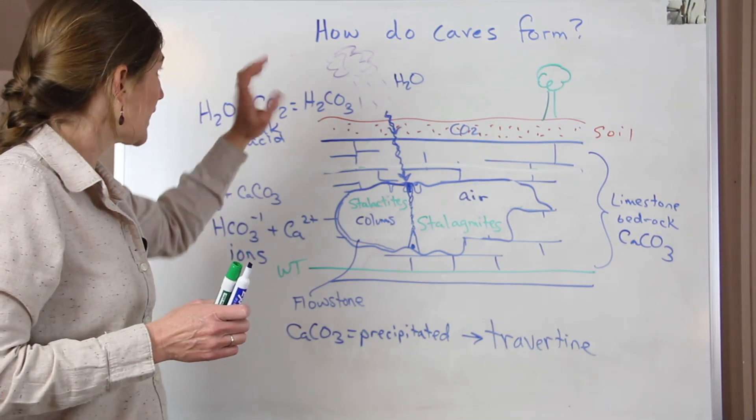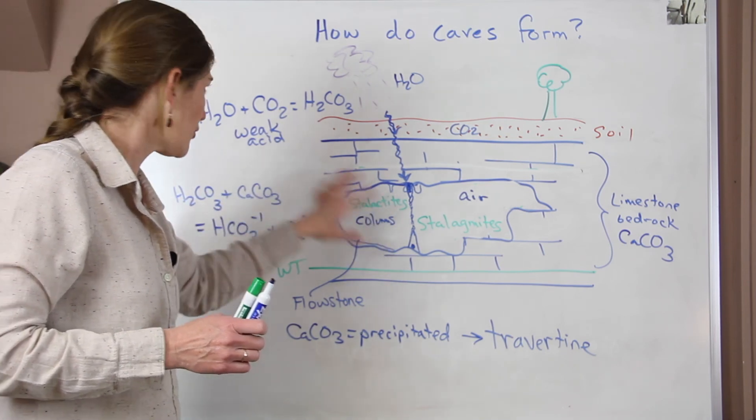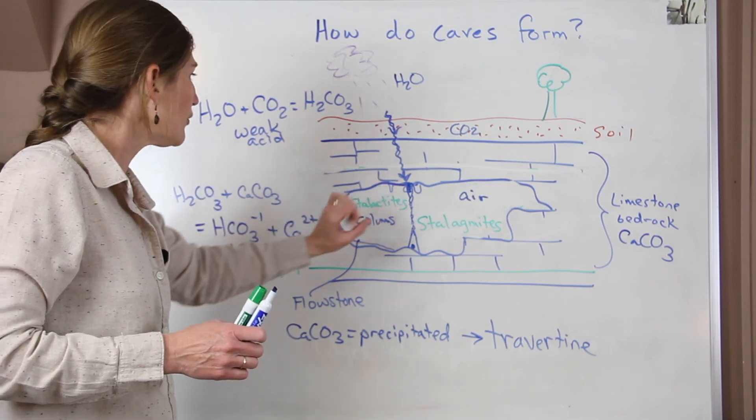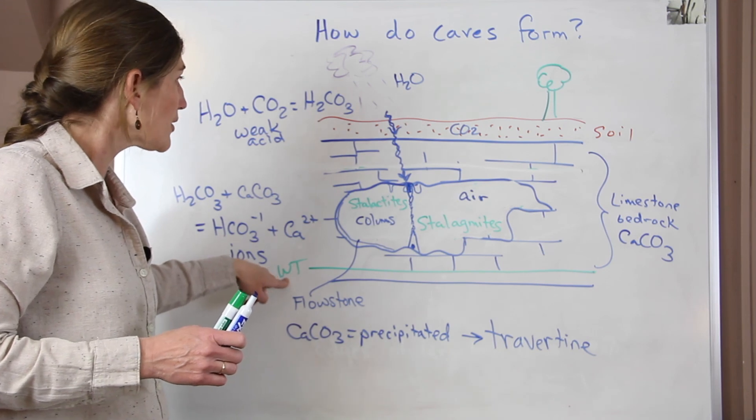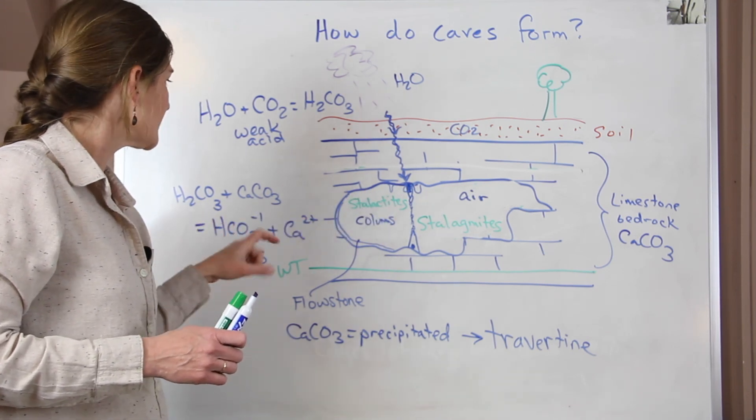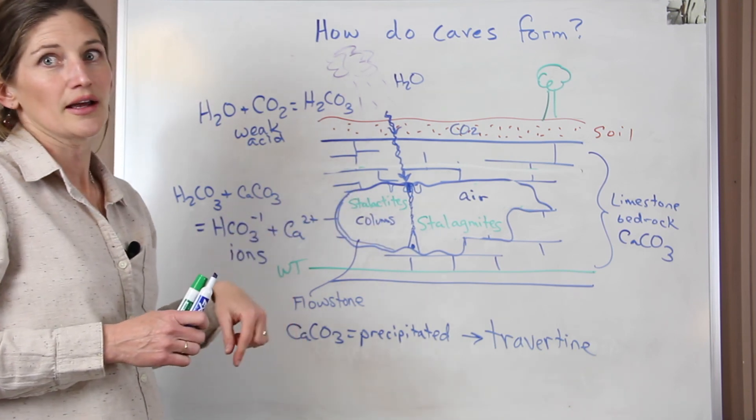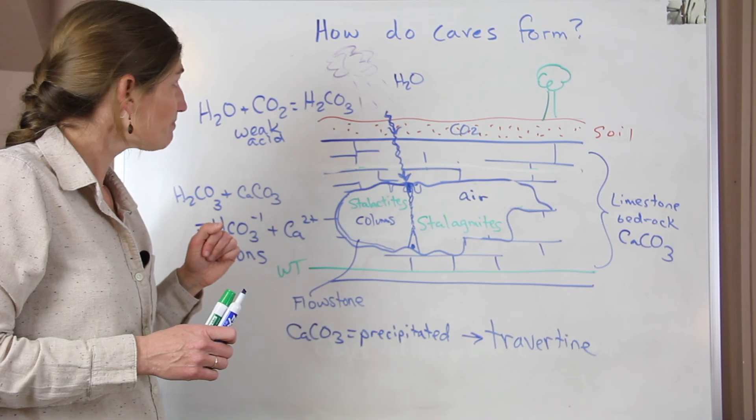But this is how caves form. So they form below the water table and it forms because of the dissolution of the limestone bedrock. And then the cool features inside of our caves form after the water table has been lowered. And it creates those deposits because we have some evaporation and then re-precipitation of those calcium and bicarbonate ions.